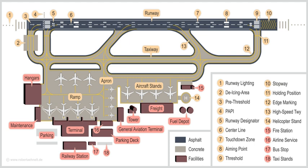Airport security normally requires baggage checks, metal screenings of individual persons, and rules against any object that could be used as a weapon. Since the September 11 attacks and the Real ID Act of 2005, airport security has dramatically increased and got tighter and stricter than ever before.